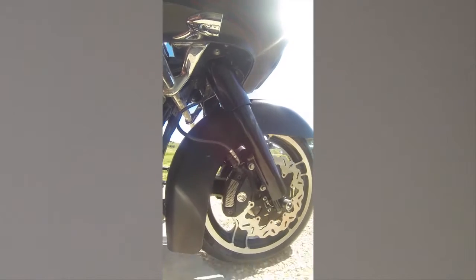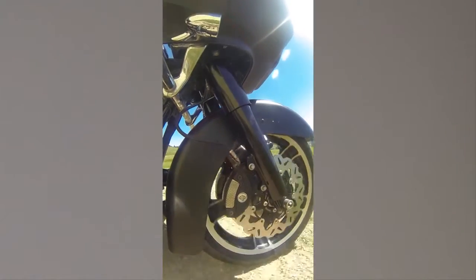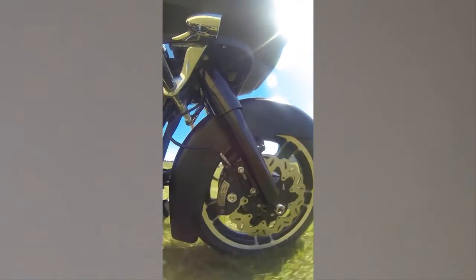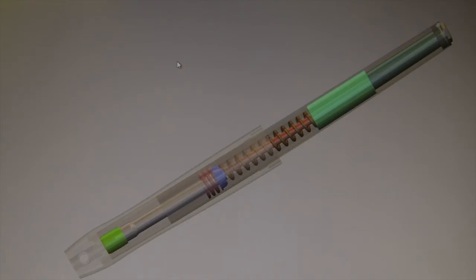When discussing front end suspension, the phrases bottom out and top out refer to the end of the compression and rebound stroke, where suspension movement stops and the rider feels an abrupt jolt.